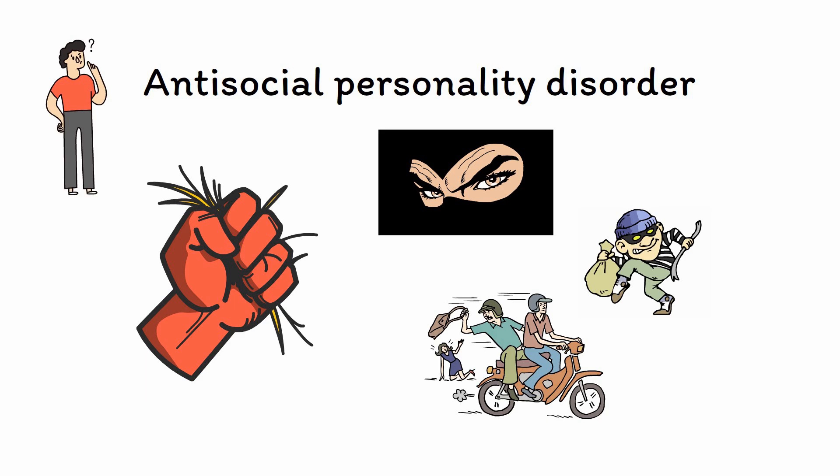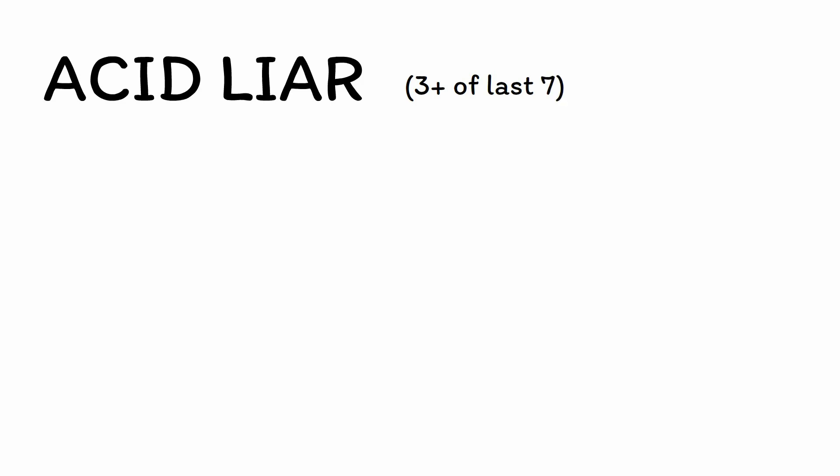This is because ASPD is really two different disorders masquerading as one. To understand this better, let's look at the DSM criteria for ASPD themselves. These criteria are captured in the mnemonic ACID LIAR, with three or more of the last seven items being required.